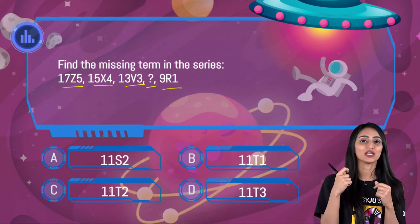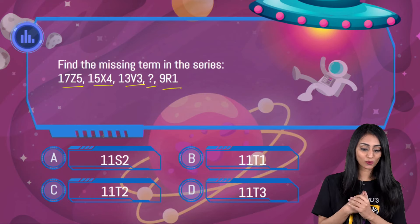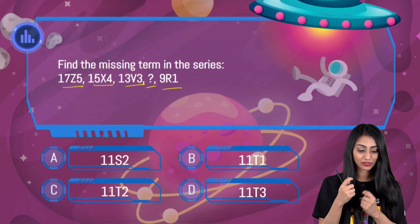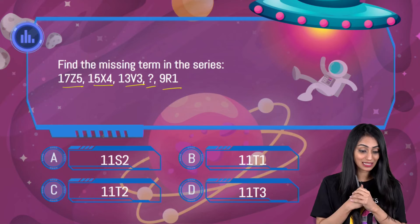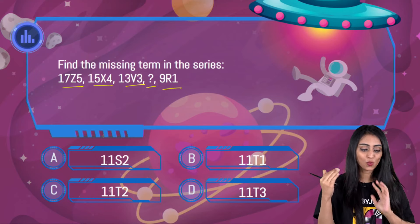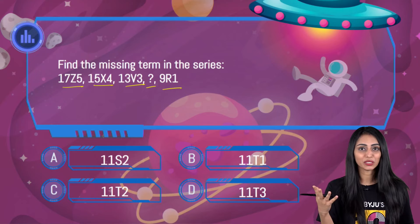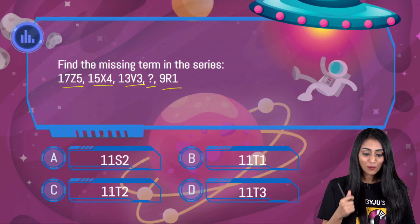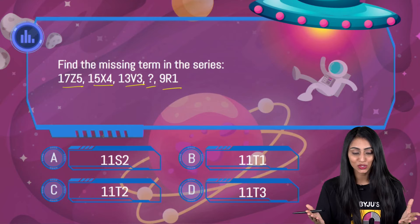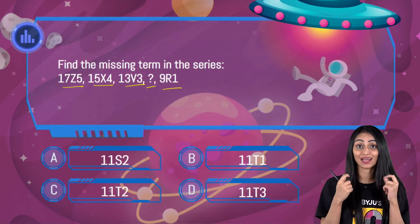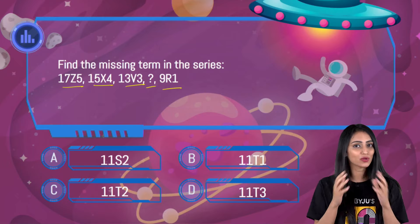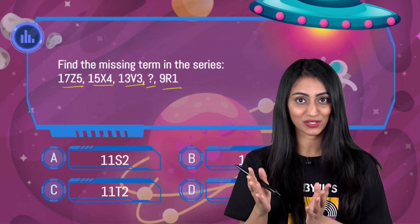So out of these four options, we have to choose the right option. Now if you look at the options, first we have 11 as the first two digits, then we have a letter — either S or T — then we have numbers like 2, 1, 2, or 3. I'm sure you are able to understand what we have to do here. Now before I show you the solution, please pause this video, take some time, try to solve this question and then check your answer.